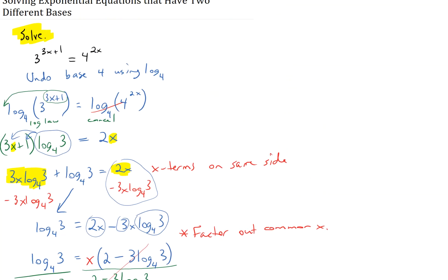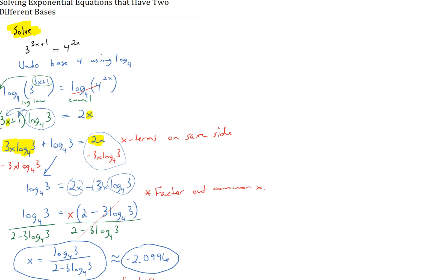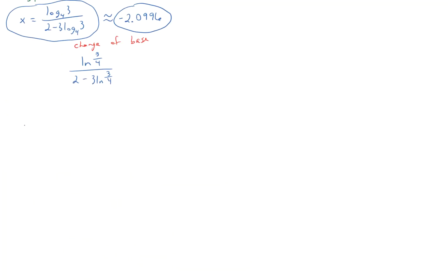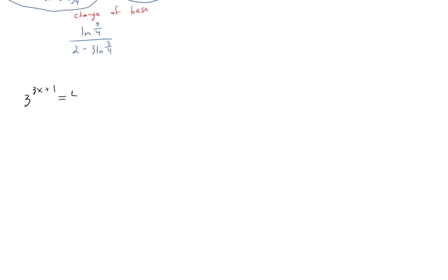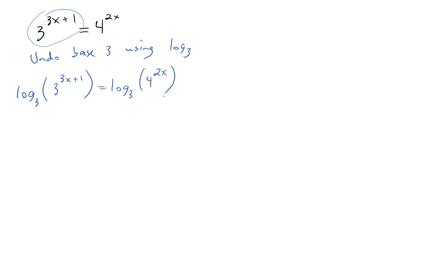So, the first method we used was to undo the base of 4. Let's redo the problem. So, 3 to the 3x plus 1 equals 4 to the 2x. And now, we'll solve it the other way, where we undo or cancel base 3. So, that would be getting rid of this guy using log base 3. So, to do that, I'll take log base 3 of both sides. So, log base 3 of the whole left equals log base 3 of the entire right side. And now, the log base 3 and the exponential in base 3 cancel, giving us 3x plus 1.